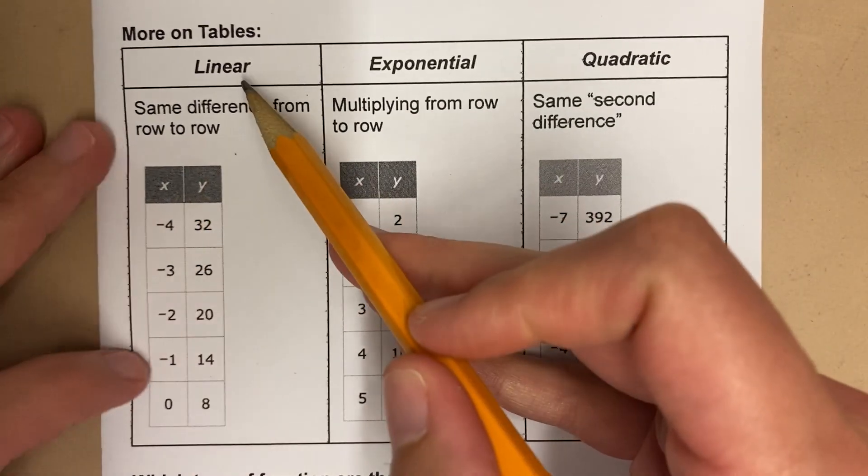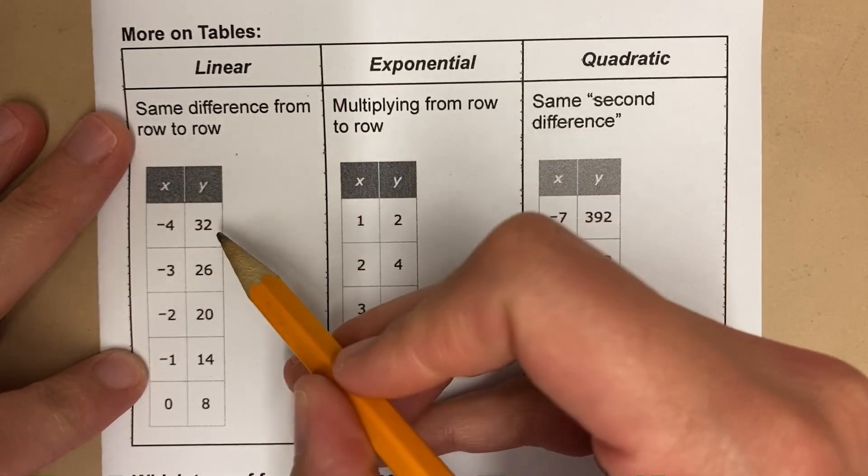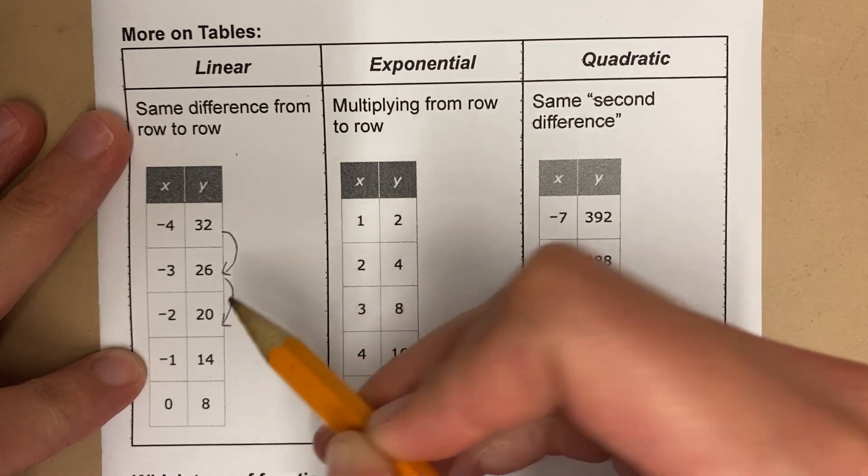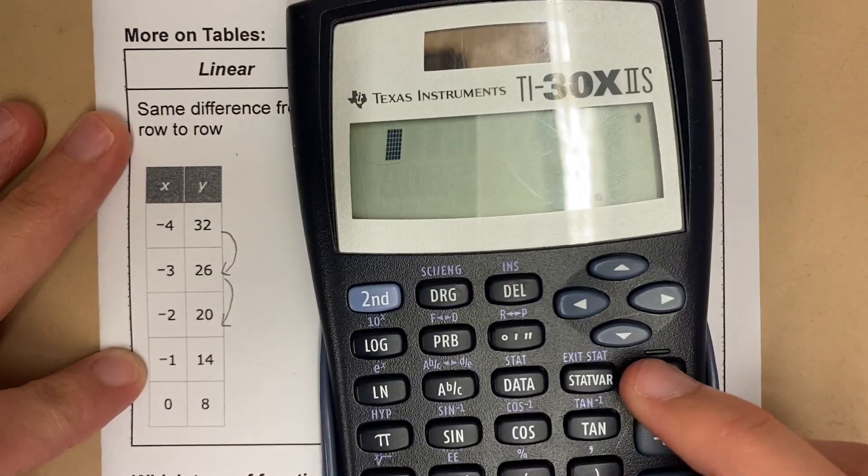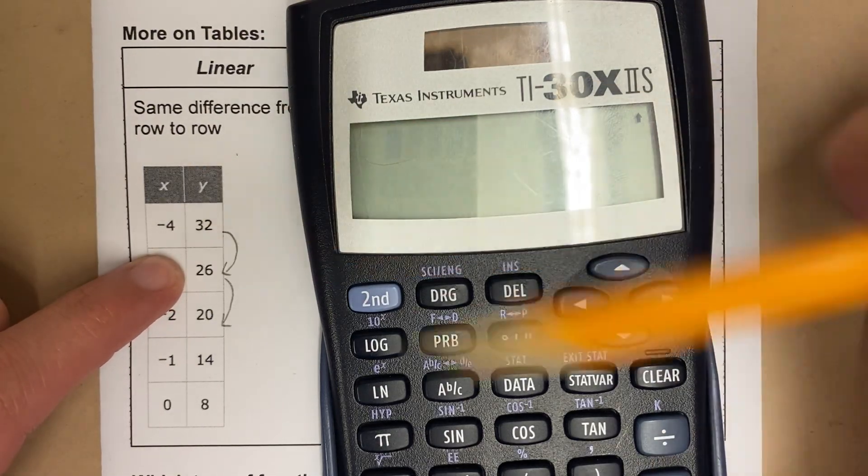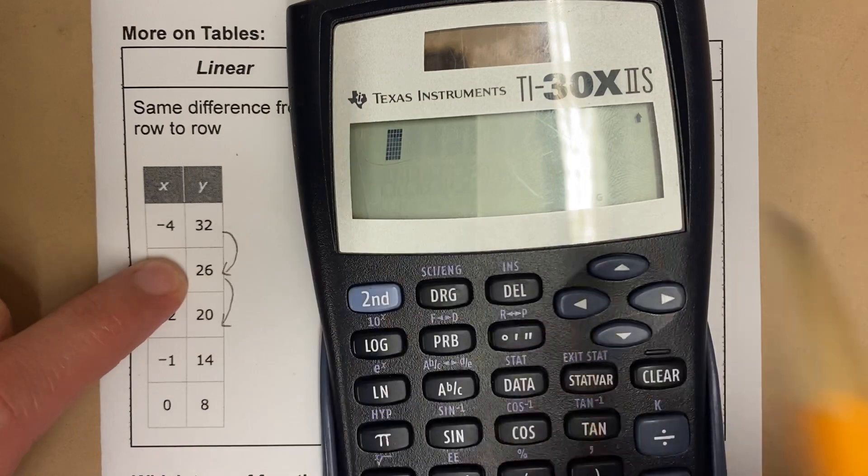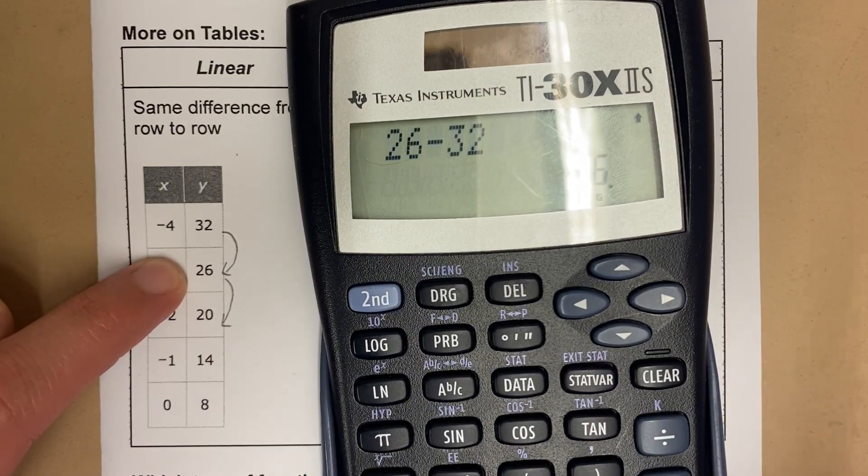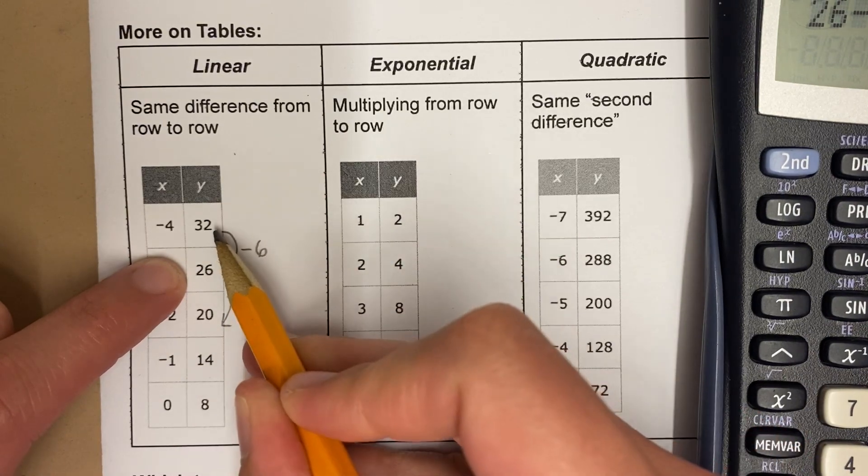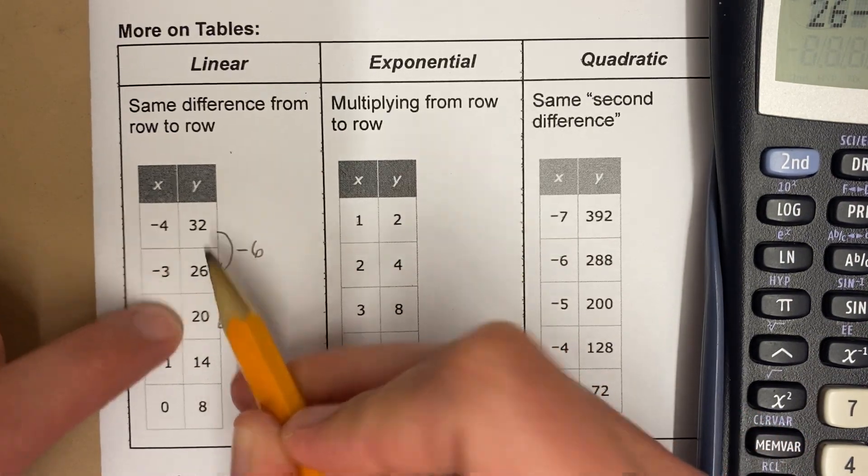The pattern in a table of a linear function always has the same difference from row to row. Here's what that means. I want to know what's the difference from 32 to 26. Difference means subtract. So what I do is I take the second number and subtract the first number. So the difference is negative 6. The difference between this number and this number is that I've subtracted 6.